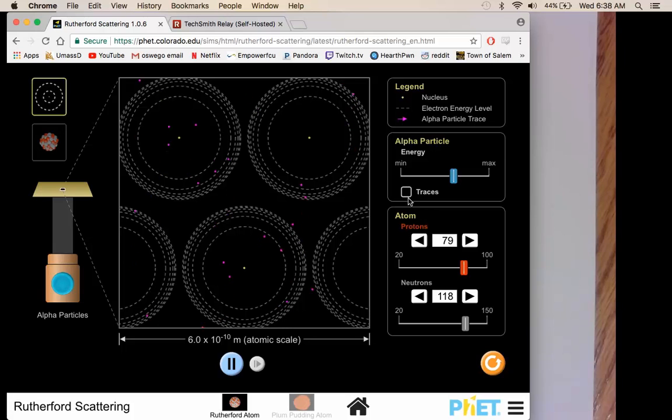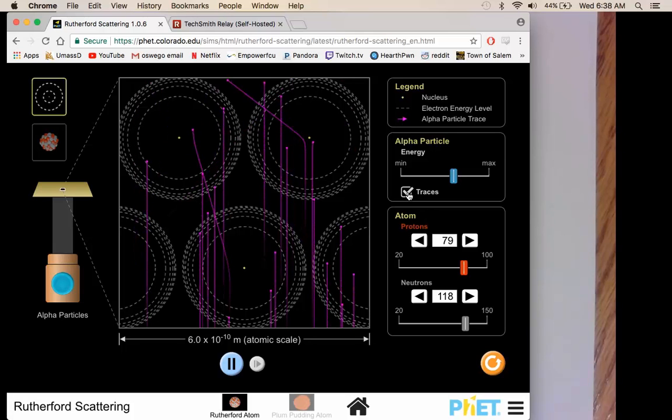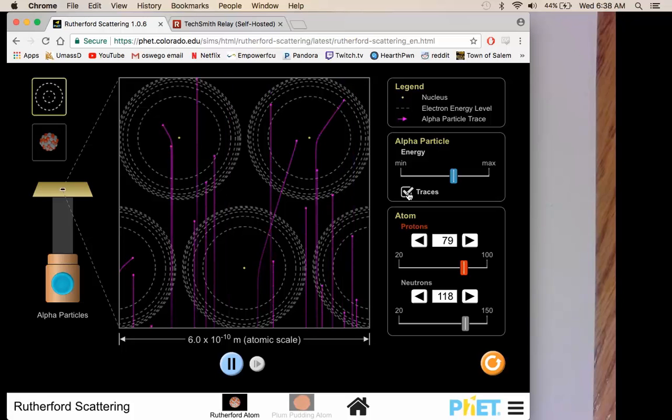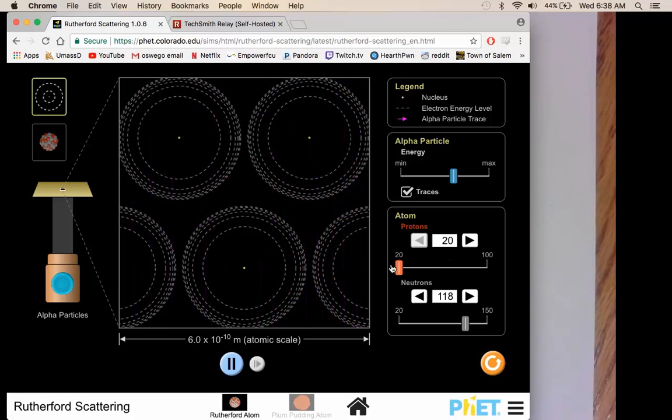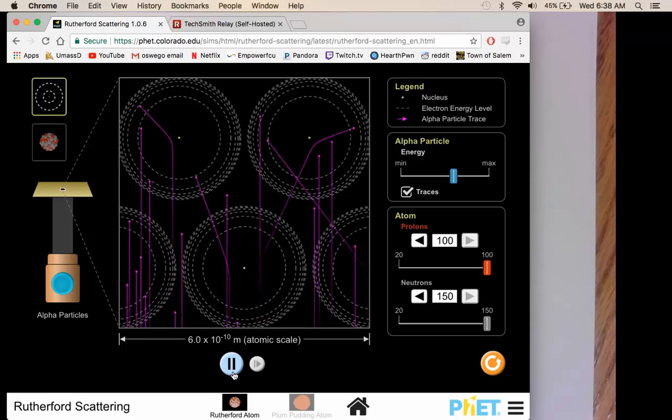One thing that's worth doing is clicking the traces. That way you can see the trace of each particle. Over here where it says atoms, protons and neutrons, this is where we can change the amount of protons and the amount of neutrons that appears in each of our models. Then we'll make inferences from there.